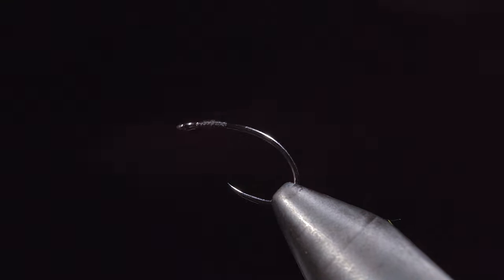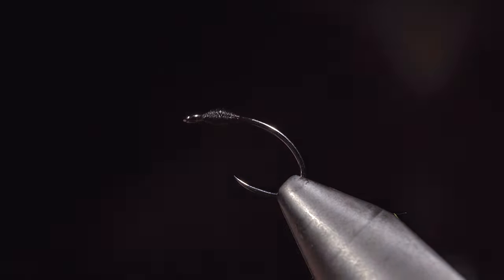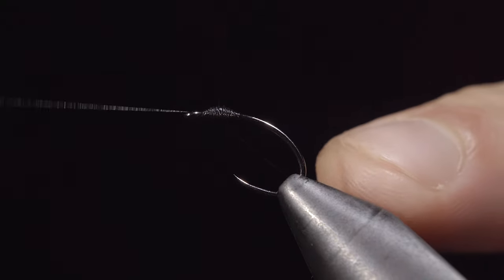To start this pattern, we'll grab some black Vivas thread and secure it to the head of our fly, snapping the excess free. We'll then create a small buildup of thread just behind the eye of our hook, whip finishing when complete, and snipping the thread free.